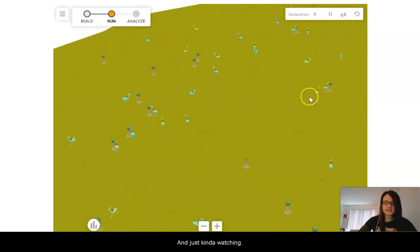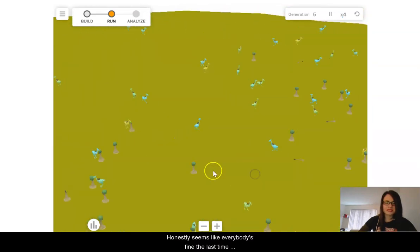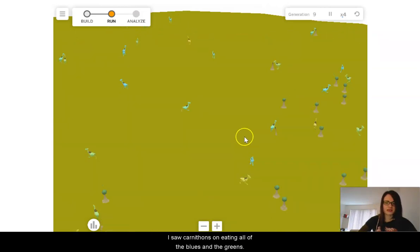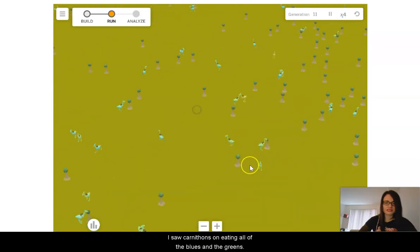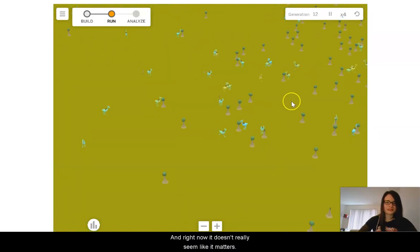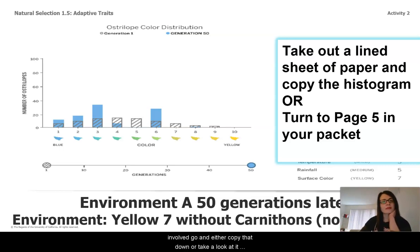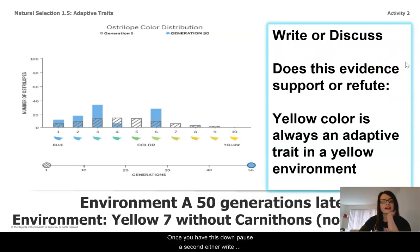I'm watching, and honestly it seems like everybody's fine. Last time I saw carnathons eating all of the blues and the greens, and right now it doesn't really seem like it matters. Here is the histogram I got for environment B when there weren't any predators involved. Go ahead and copy that down or take a look at it in your packet, then pause and write or discuss: does this evidence support or refute the idea that being yellow is always adaptive in a yellow environment?